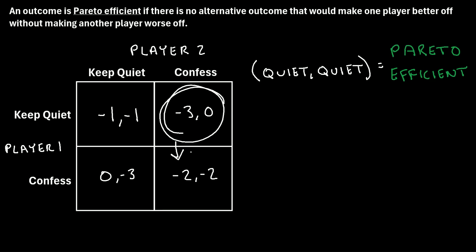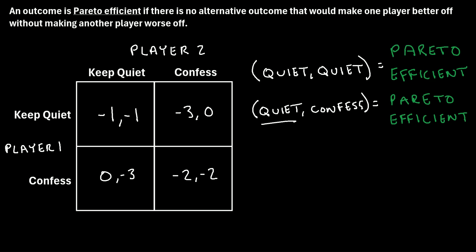Lastly, if we moved to the remaining alternative, player one improves from negative three to negative two, but player two would go from zero to negative two — worse off. Because there is no alternative outcome that could make one player better without making the other worse off, this is also a Pareto efficient outcome. The outcome where player one remains quiet and player two confesses is Pareto efficient.